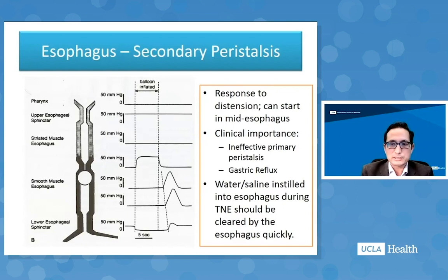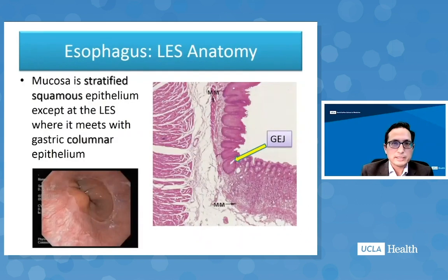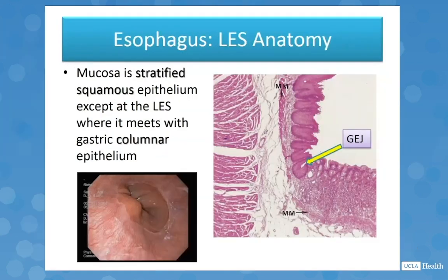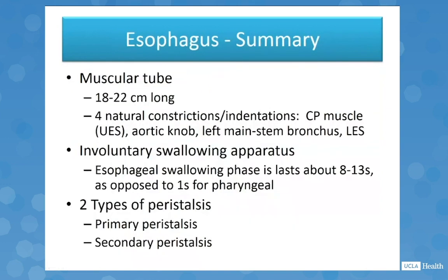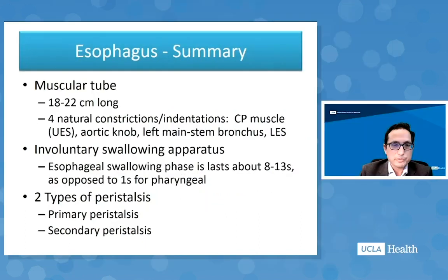Water or saline instilled into the esophagus during transnasal esophagoscopy should be cleared quickly. The lower esophageal sphincter mucosa is stratified squamous epithelium until the gastroesophageal junction, where it meets gastric columnar epithelium. In summary, the esophagus is a muscular tube 18 to 22 centimeters long with four natural constrictions, an esophageal swallowing phase lasting about 8 to 13 seconds — compared to the pharyngeal phase lasting about a second — and two types of peristalsis: primary and secondary.